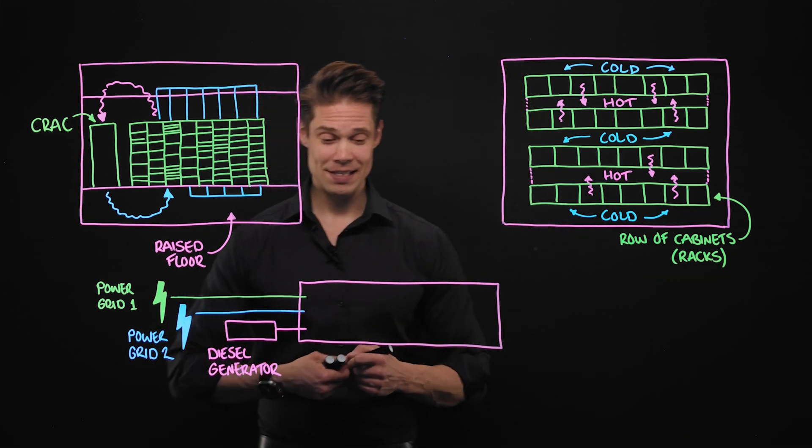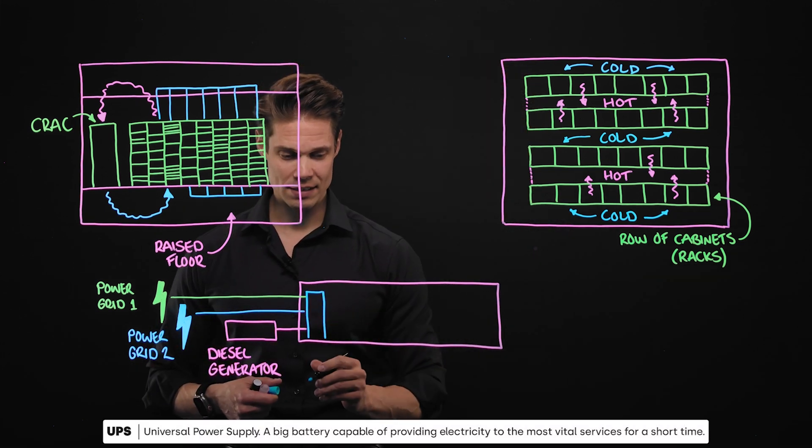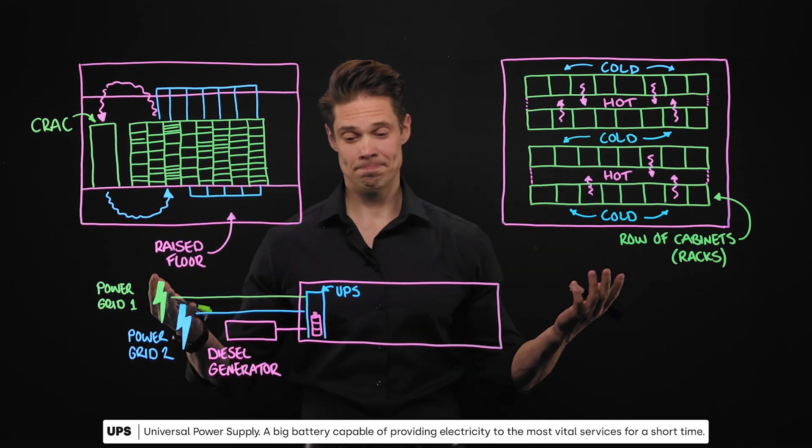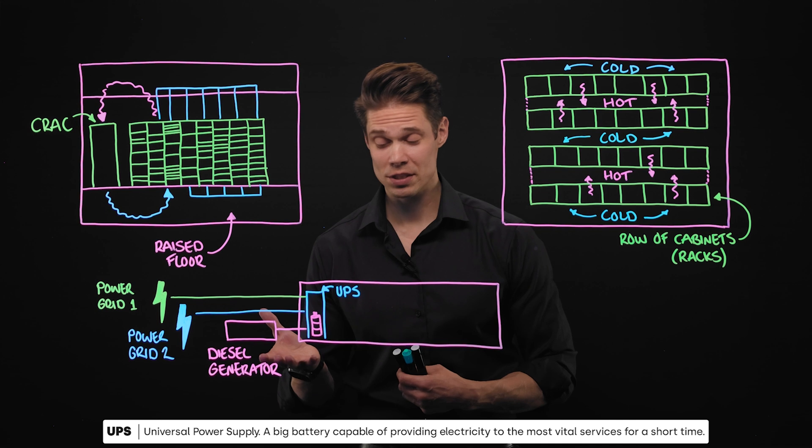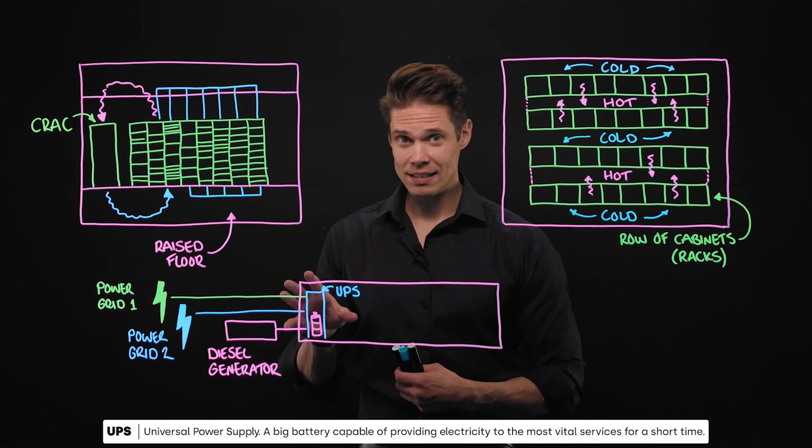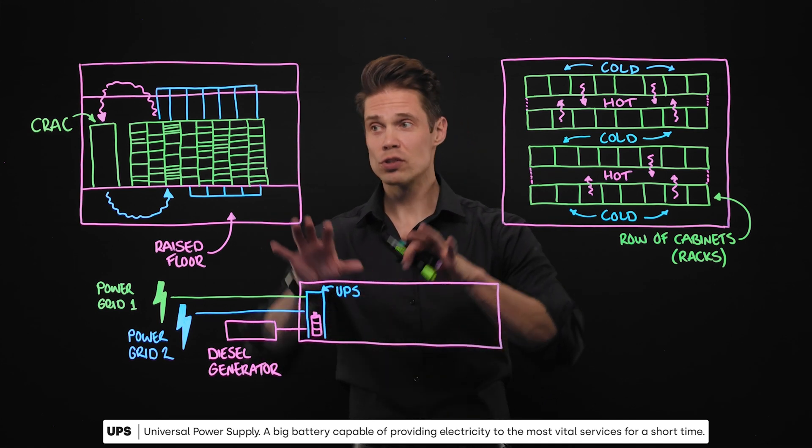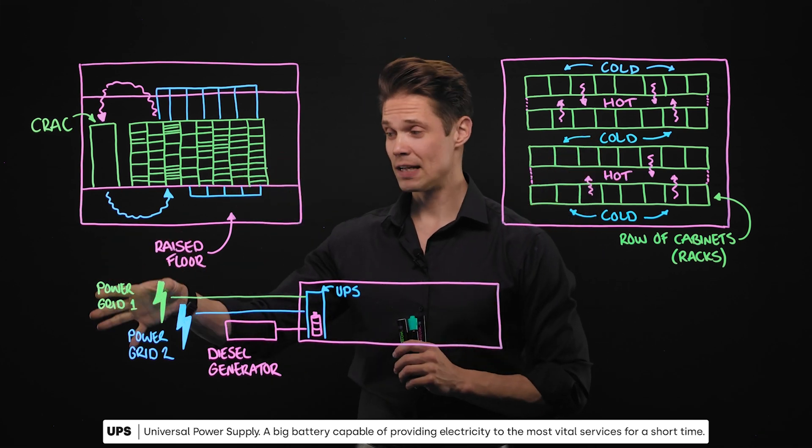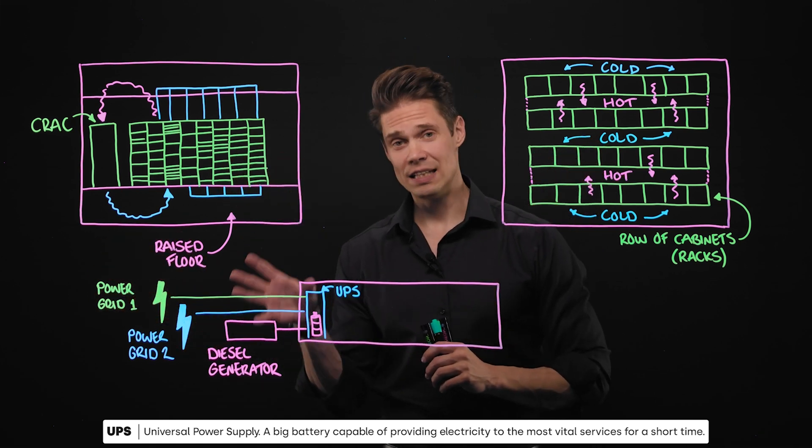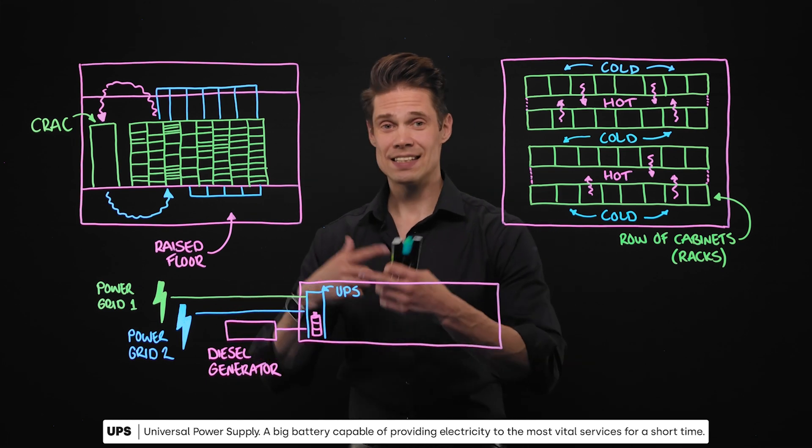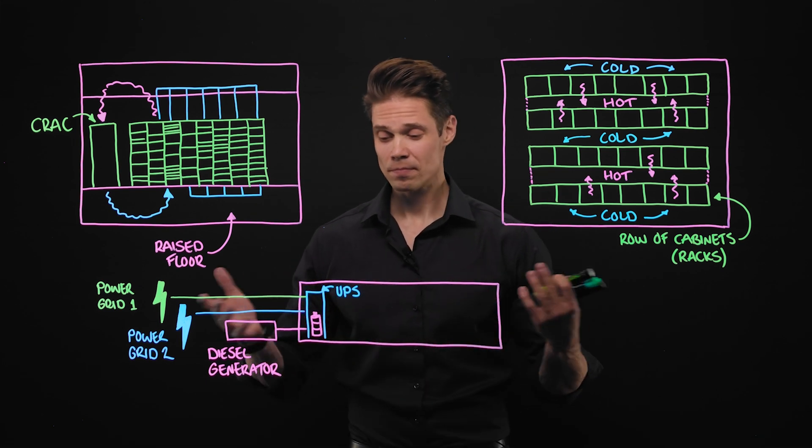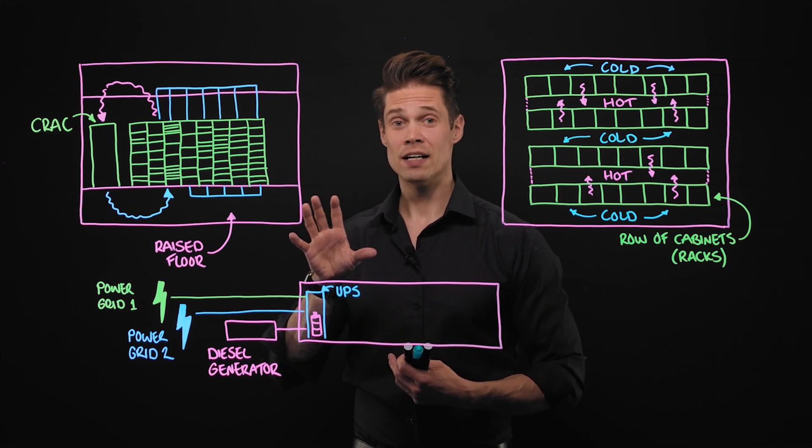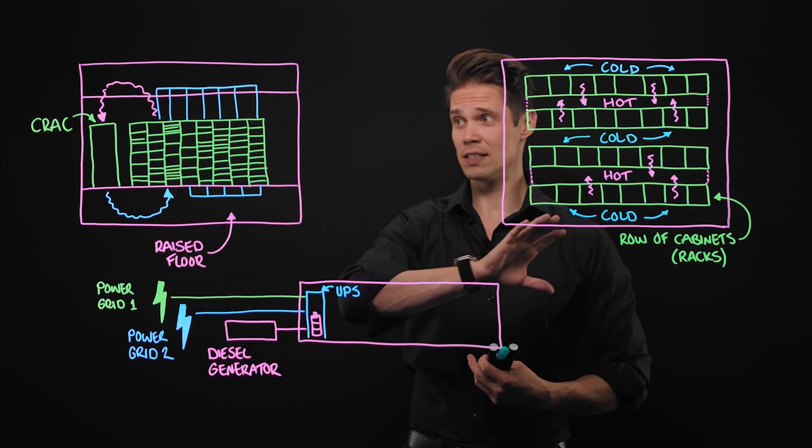But we still have one ace up in the sleeve. UPS device, just a big battery that has maybe minutes or half an hour or something. Capacity to power up the most crucial servers and storage devices in case there is a power failure in one of these grids and the diesel generator doesn't have time to kick in. And UPS can also provide consistent clean electricity to all the devices here.